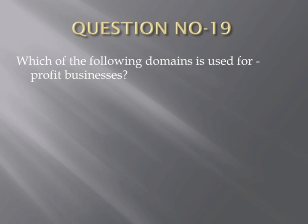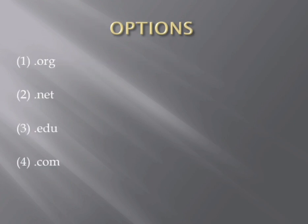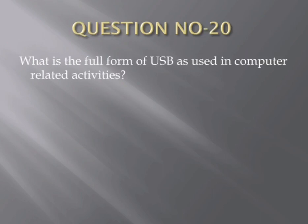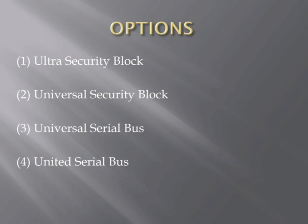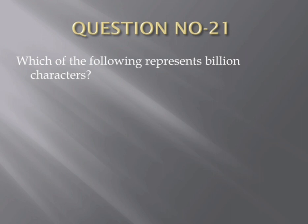Question number nineteen. Which of the following domains is used for profit business? Options: .org, .net, .edu, .com. The correct answer is .com. Question number twenty. What is the full form of USB in computer-related activities? Options: (1) Ultra Security Block, (2) Universal Security Block, (3) Universal Serial Bus, (4) United Serial Bus. The correct answer is Universal Serial Bus.